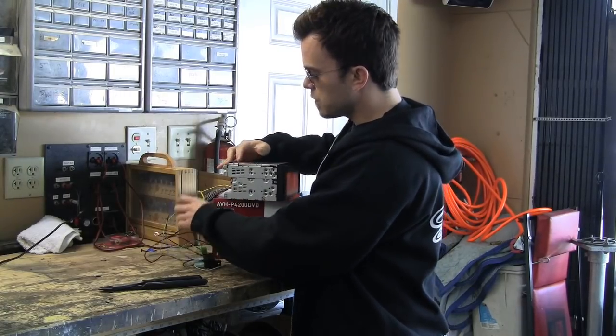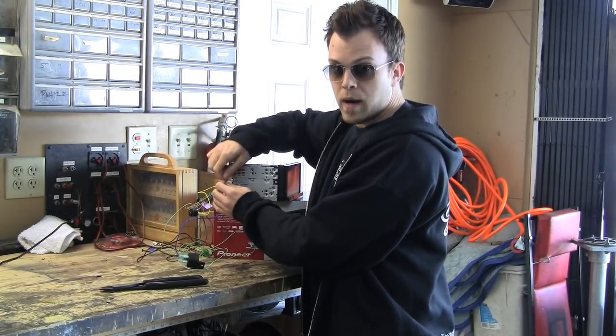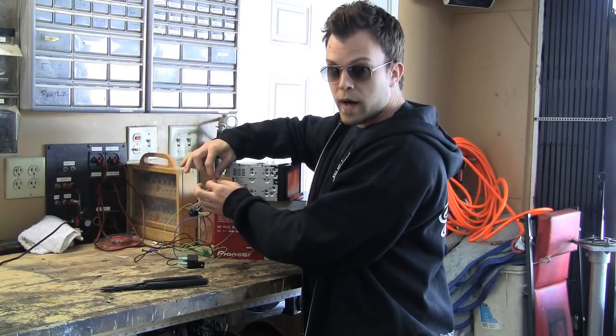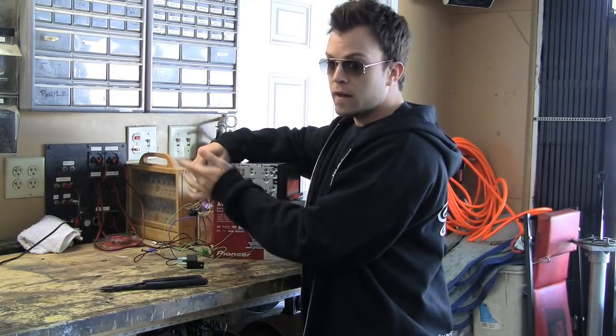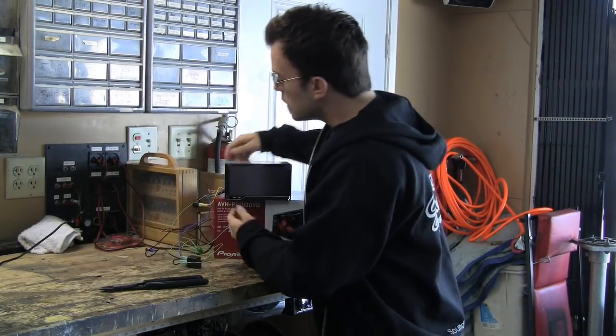Did I explain that this would turn on an amp, too, at the same time? So if you want to turn your amp on or a power antenna, you can still tie another wire into this, and it'll turn the relay on, and it'll turn the amplifier or your power antenna on.